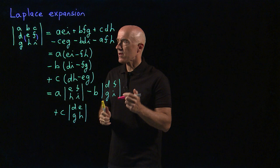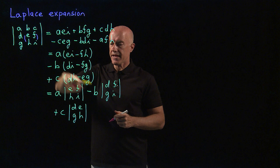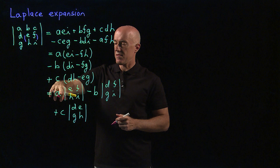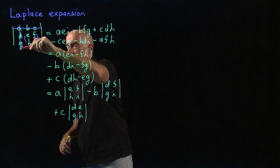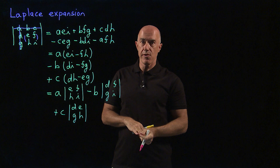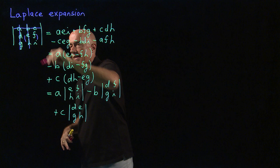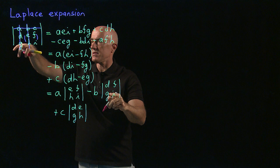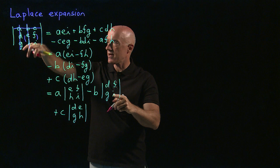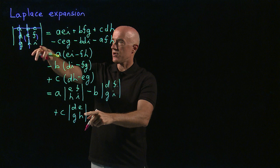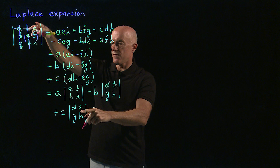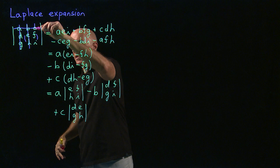Where do these 2×2 determinants come from? We go across the first row — A, B, C. For A: remove the first row and first column, leaving matrix [E, F; H, I]. For B: remove the first row and second column, leaving [D, F; G, I]. For C: remove the first row and third column, leaving [D, E; G, H]. That absolutely generalizes to an n×n matrix.